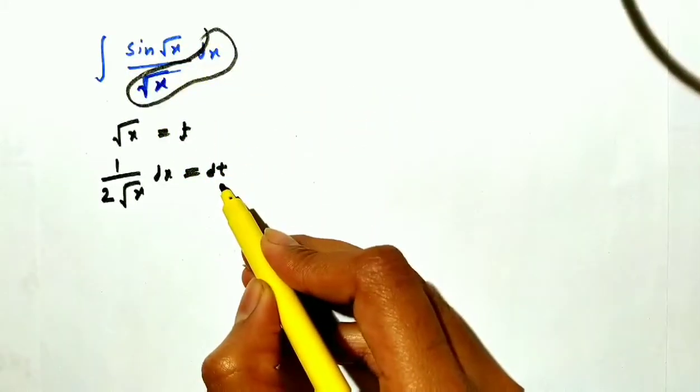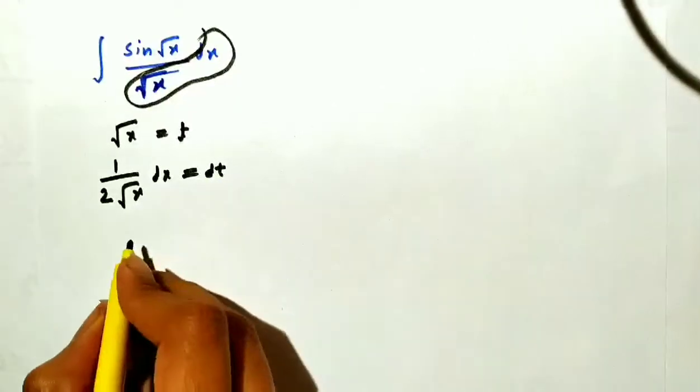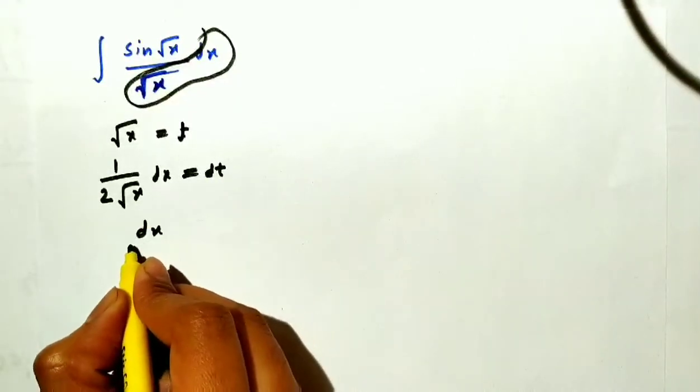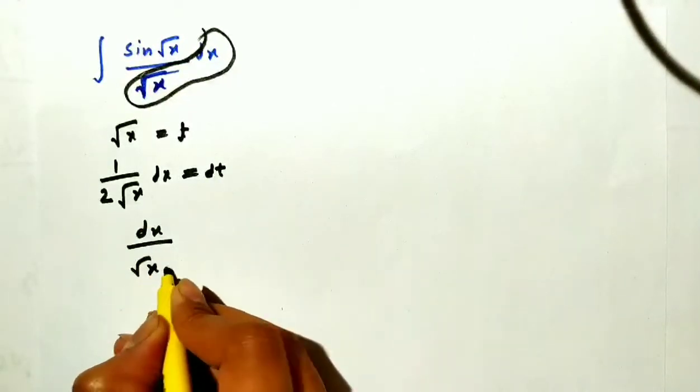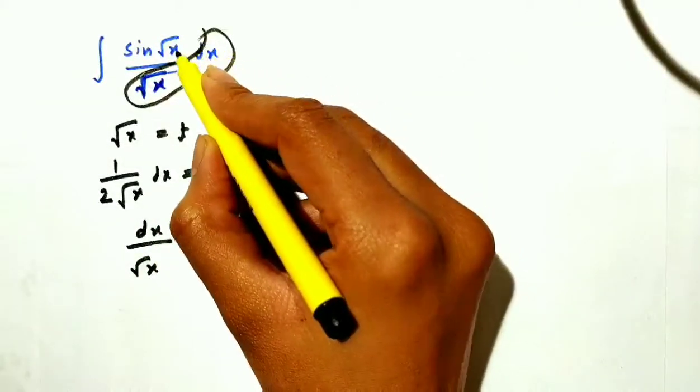Replace this with dt, then 2dt. We can solve this: dx/√x is equal to 2dt. So we need to replace this with 2dt.